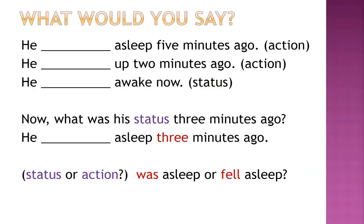Now this gets a little tricky. What was his status three minutes ago? 'He was asleep three minutes ago' — is it status or action? Was asleep or fell asleep? He was asleep three minutes ago, referring to his status at that time.